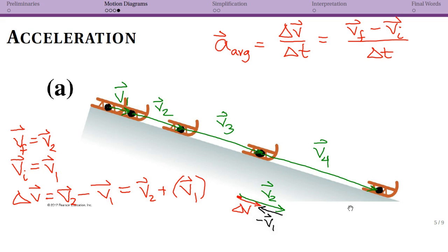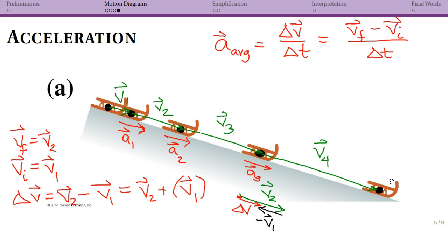So my first acceleration vector a1 is drawn off to the side. I can repeat this process for v3 minus v2 and v4 minus v3. Without showing all of them graphically, you would do it the same way, and in this situation you actually get the same acceleration each time. Even if you did it out graphically, subtracting v3 from v4 gives the same vector every single time.